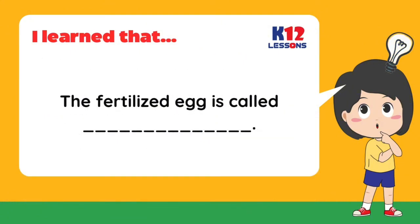The fertilized egg is called _____. Examples of animals that undergo sexual reproduction are butterflies, frogs, mosquitoes, dogs, and cats. Though all of them reproduce sexually, they have different modes of reproduction.